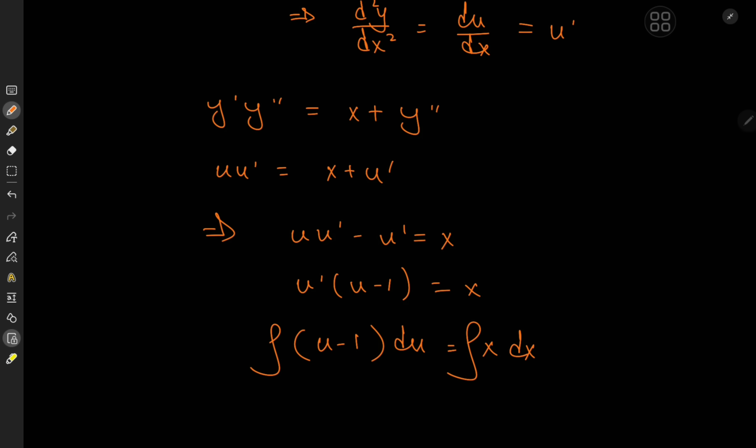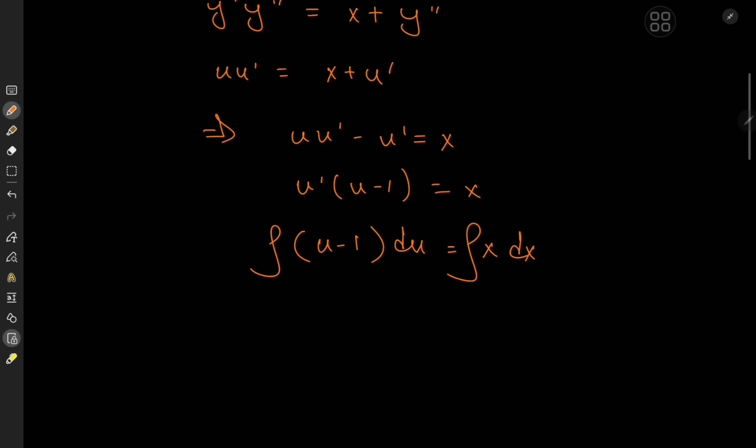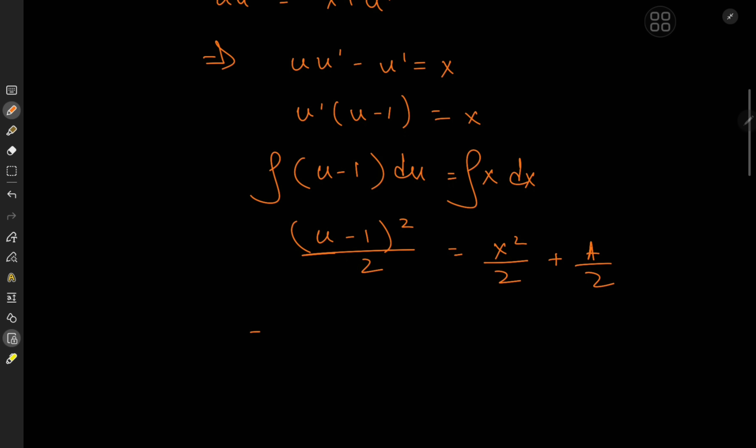So we'll write this as (u - 1) du equals x dx. And we'll integrate to get on the left hand side (u - 1)²/2. On the right I have x²/2 plus a constant of integration that I'm writing as a/2. And the only reason I threw an over 2 is so that I could get rid of it.